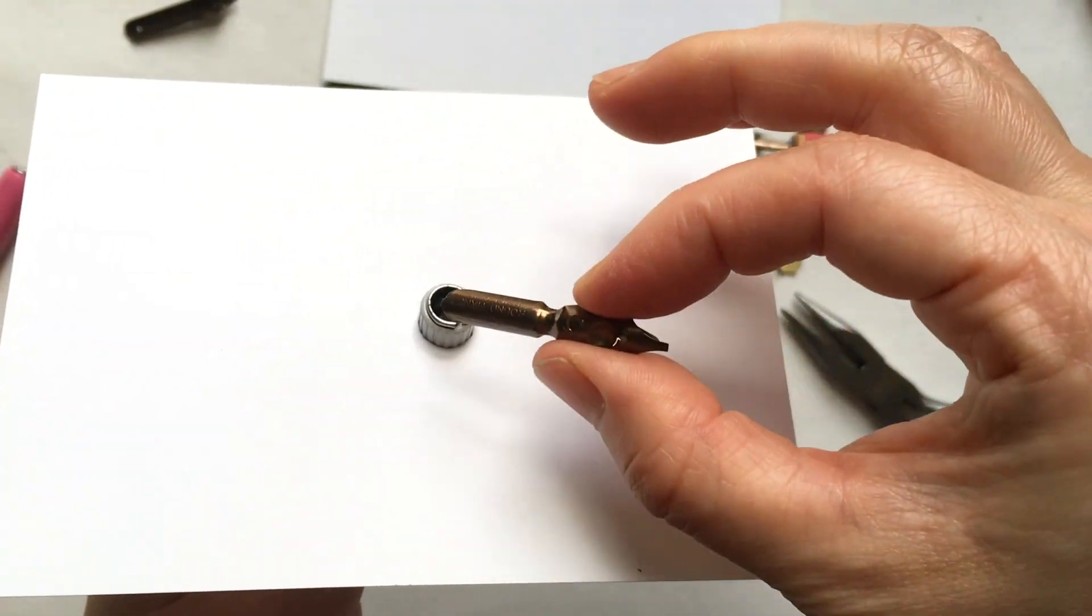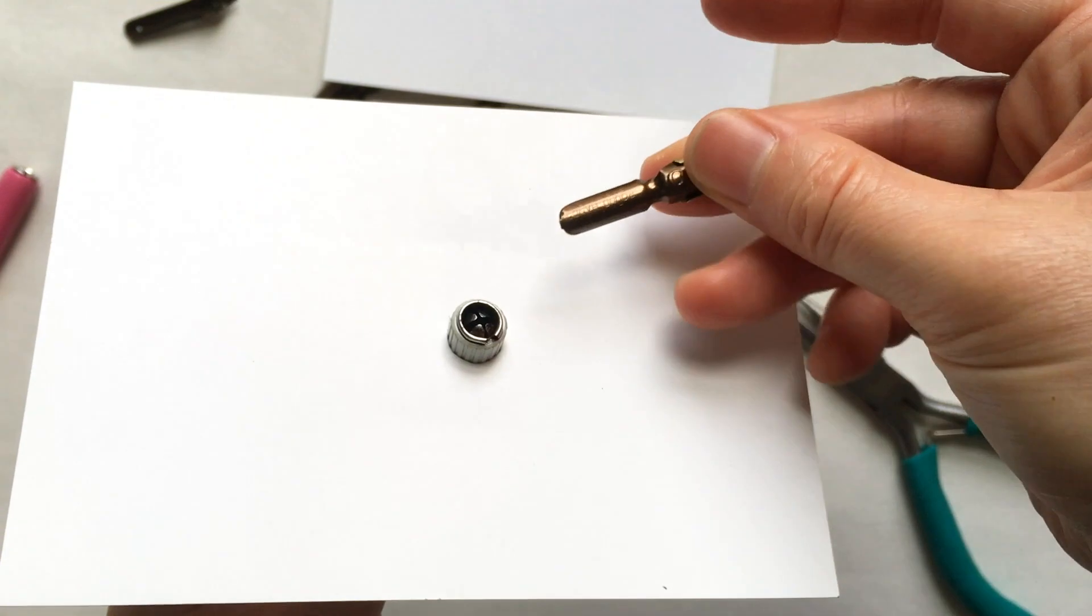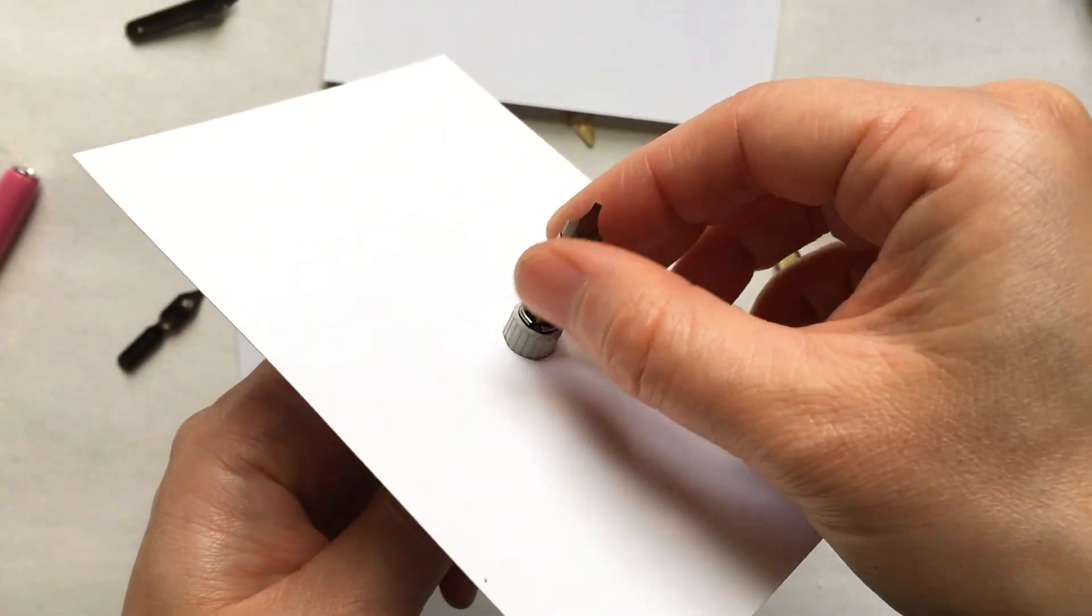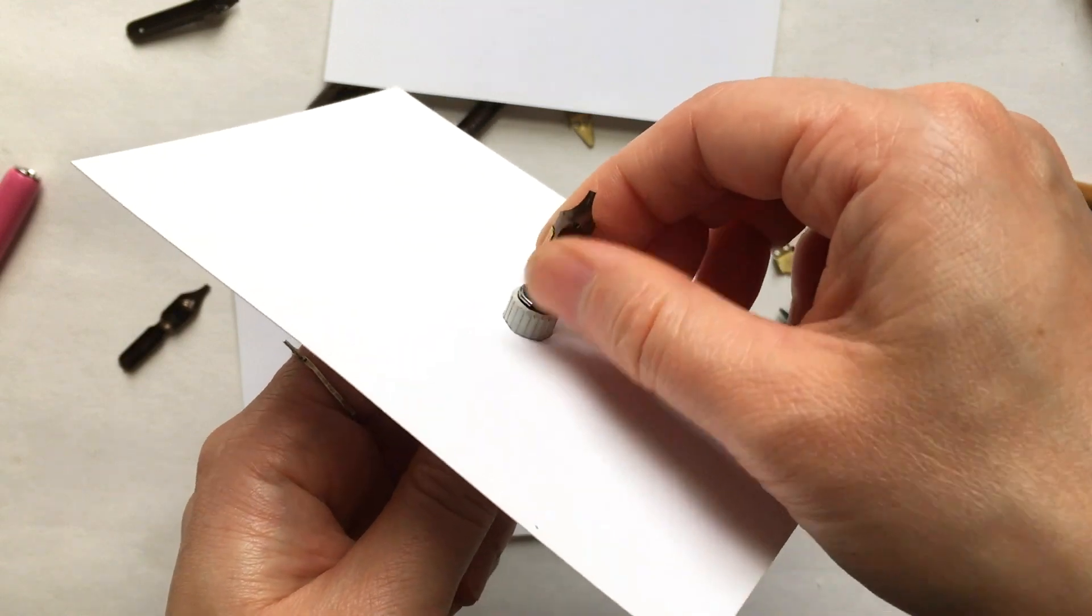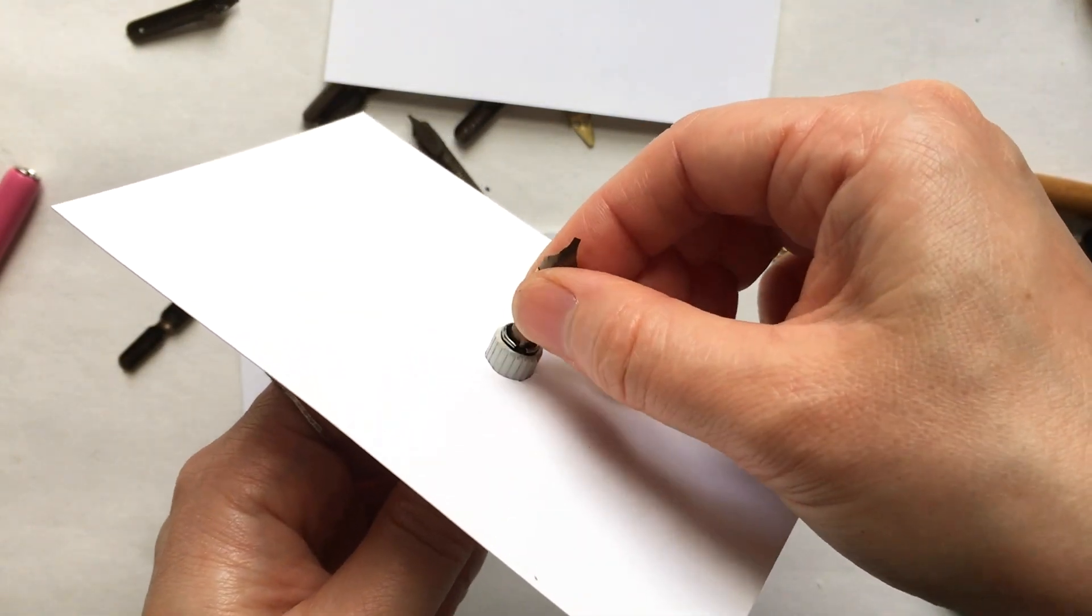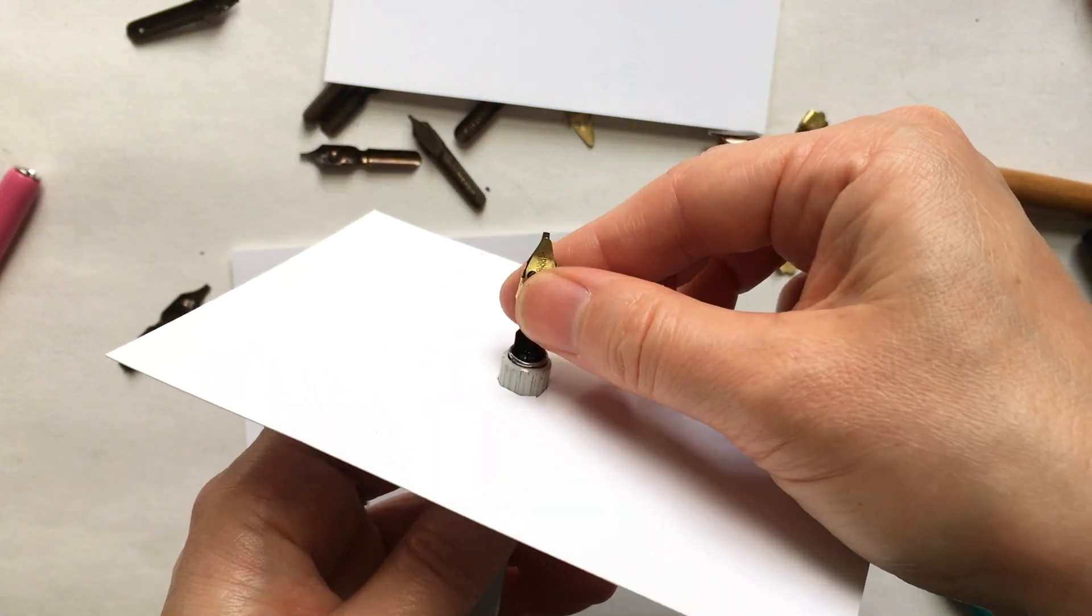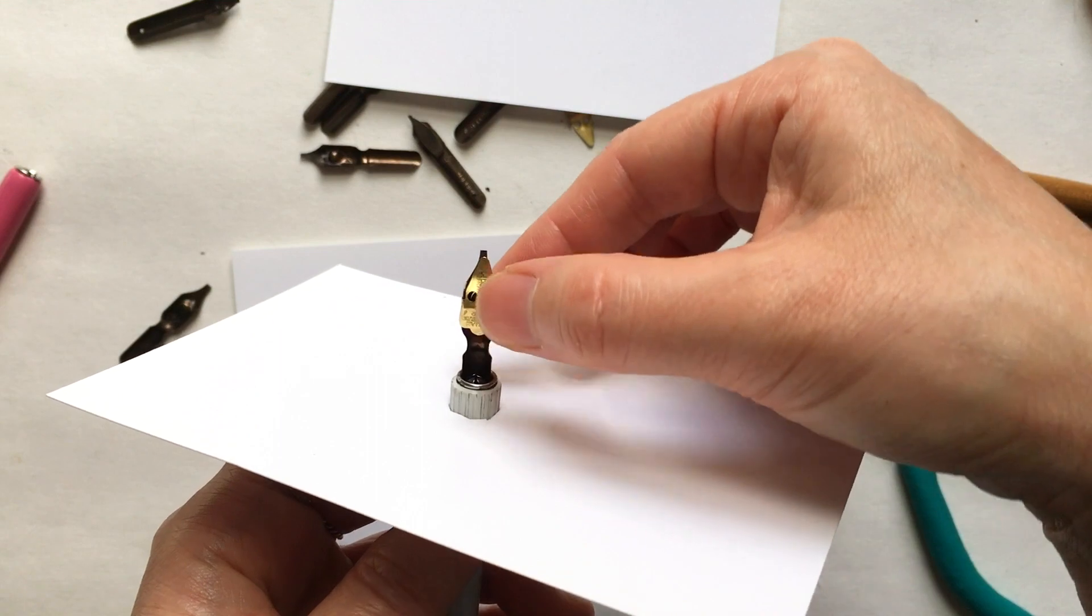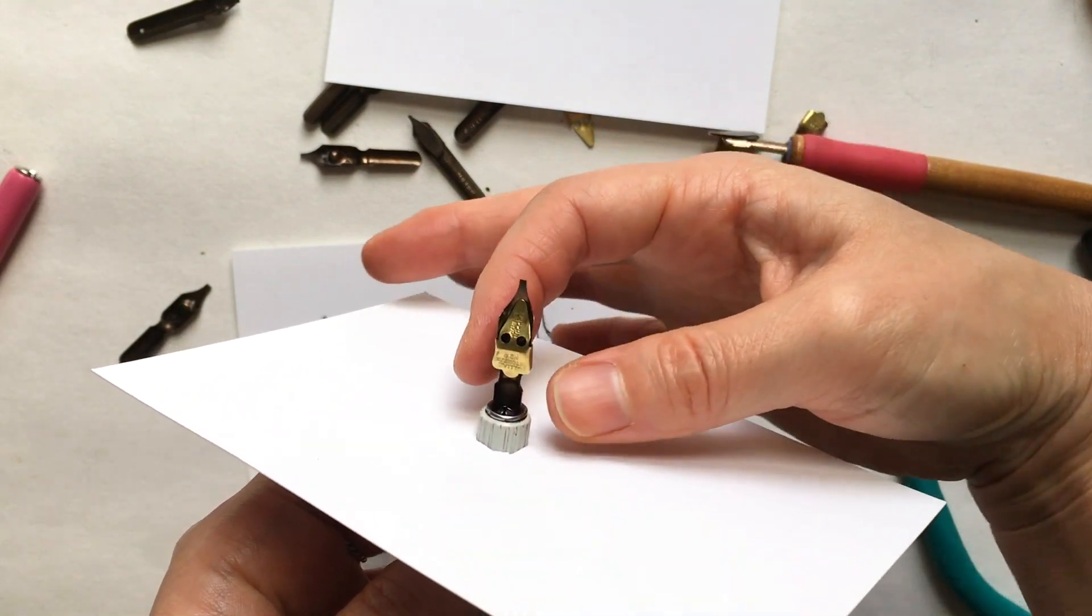When you put the nib into the pen holder, don't squeeze the side. Hold the top and the bottom and then insert it until it's nice and snug, so the pen is not wobbly. You don't want a wobbly pen when you're writing. And then make sure the reservoir is still in the right place.